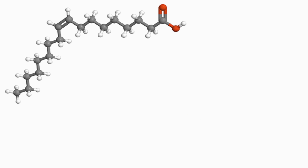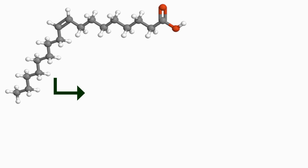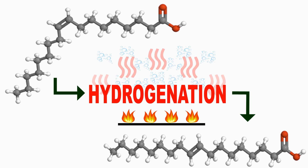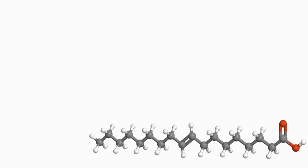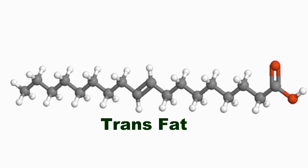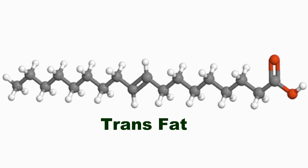And this is what we call a trans fat. Now what this does is straighten the molecule out so it looks more like a saturated fat, but it's still an unsaturated fat because it has double bonds in it.